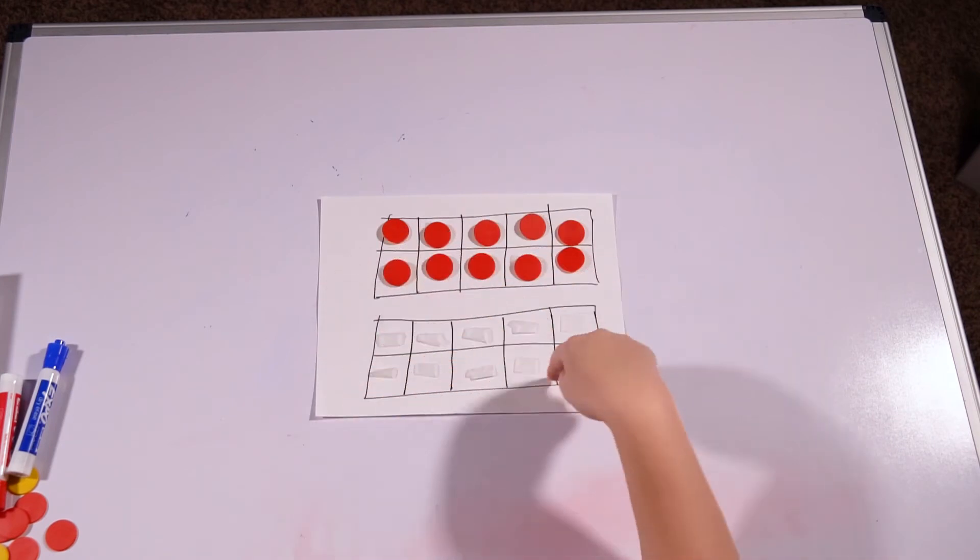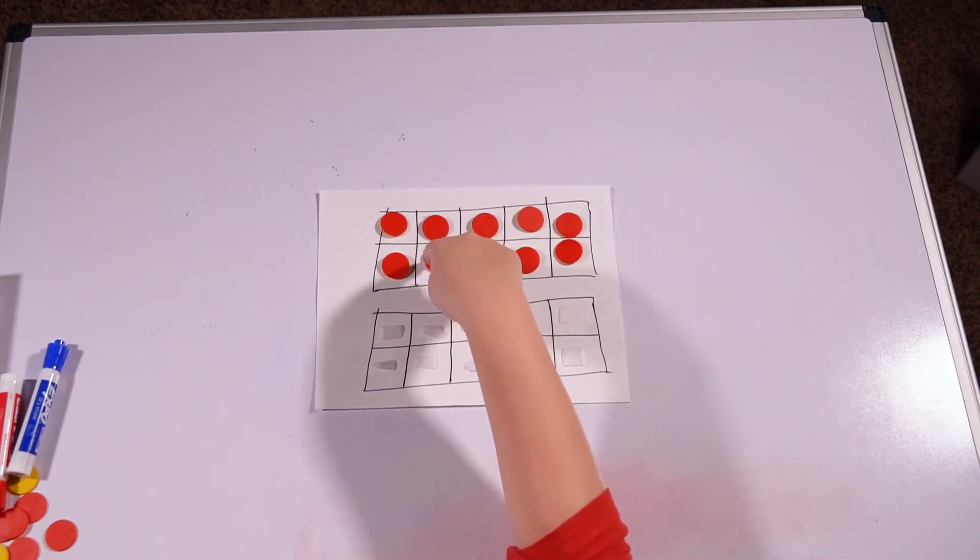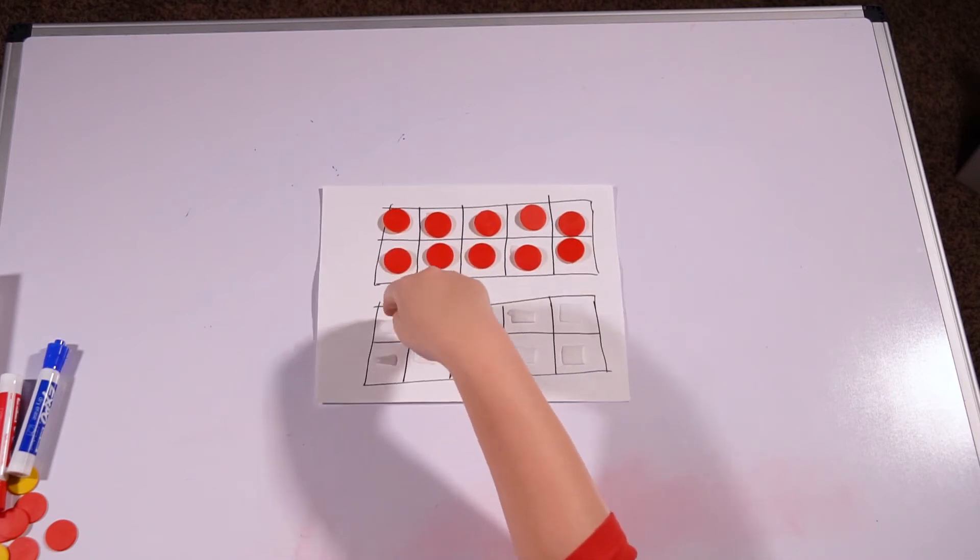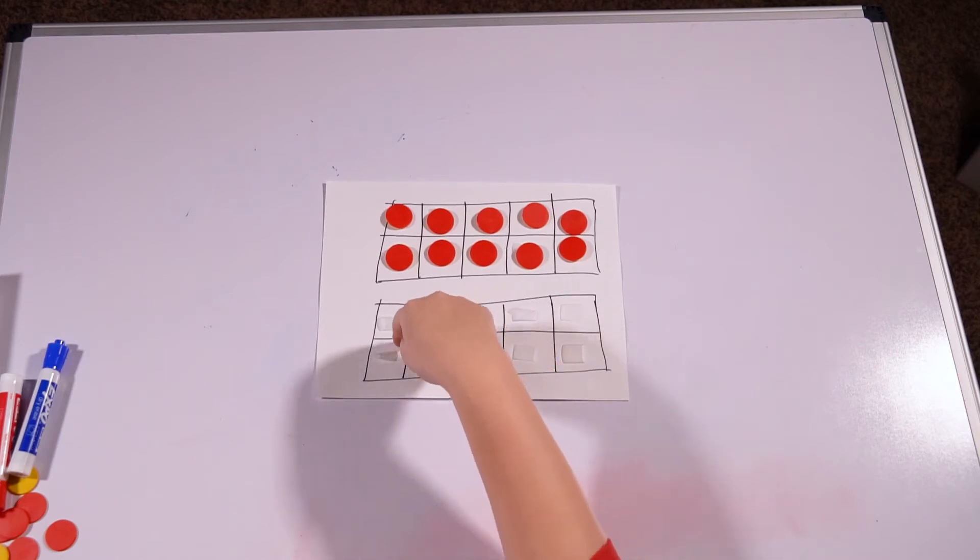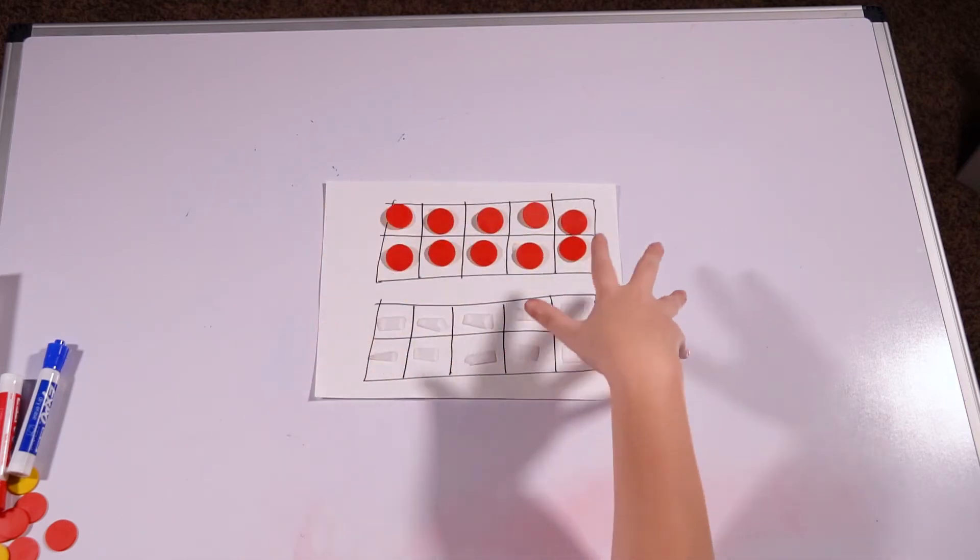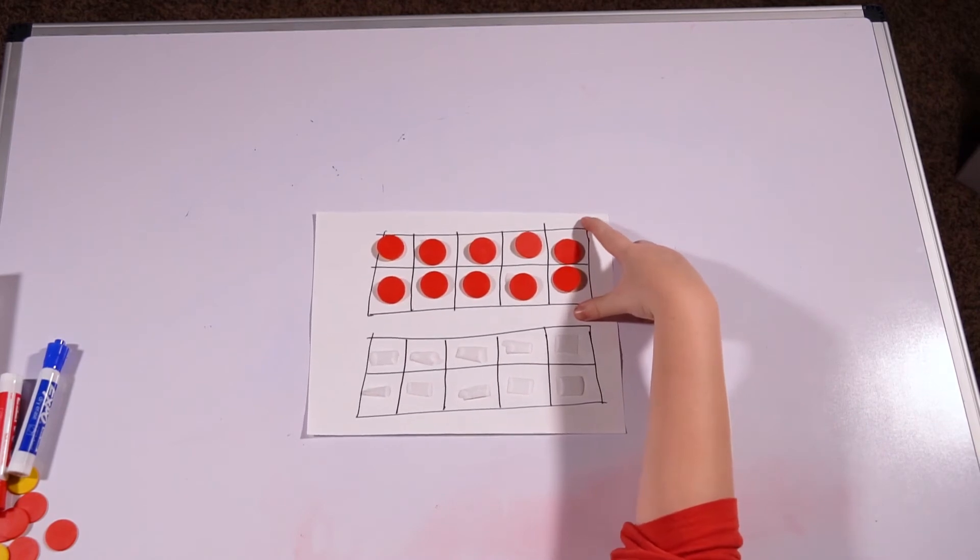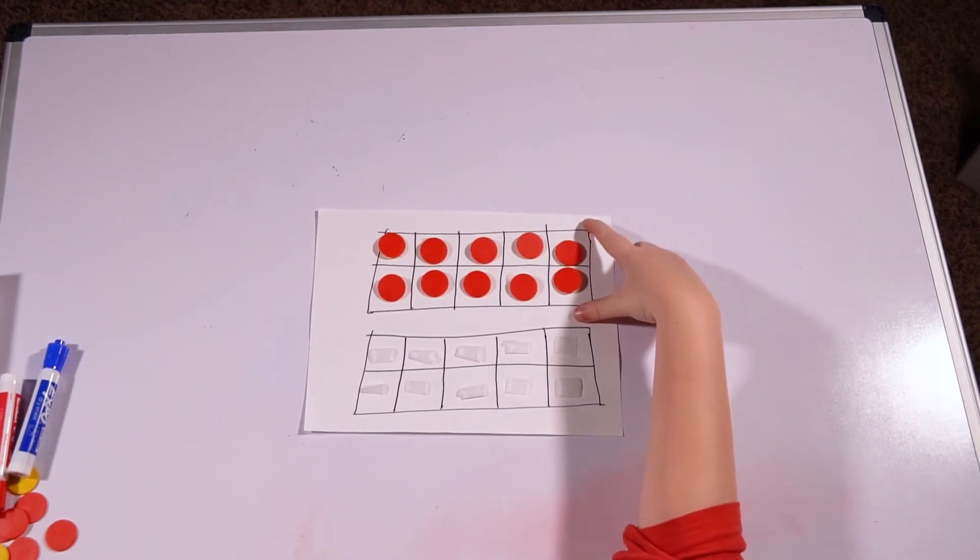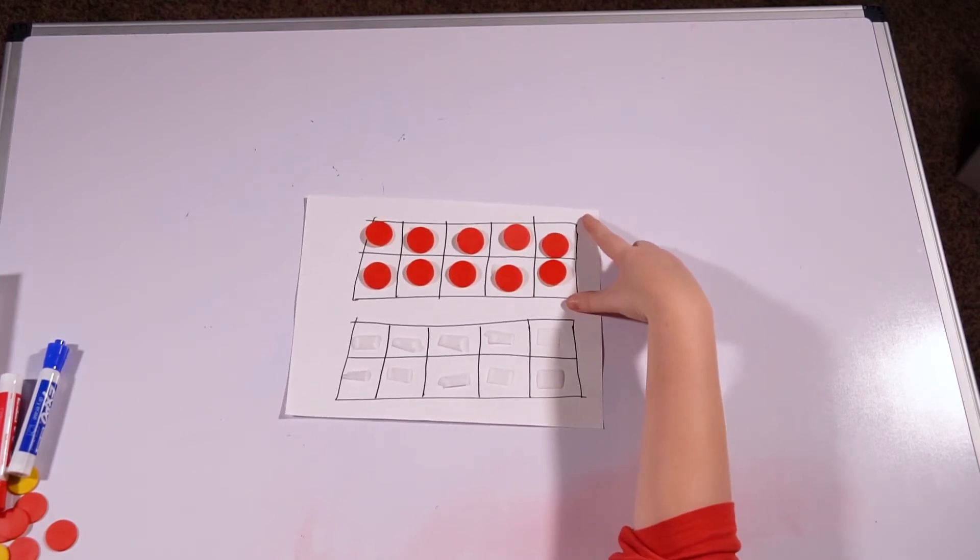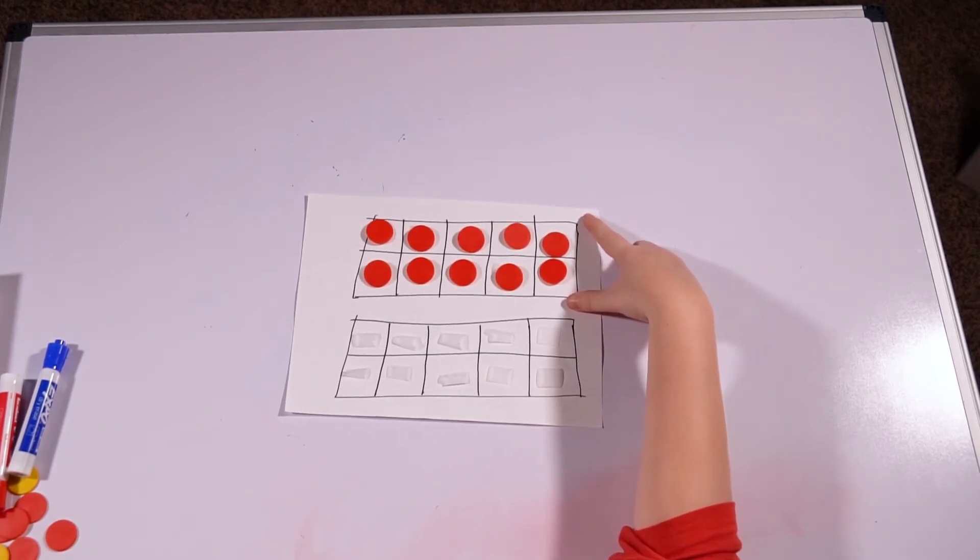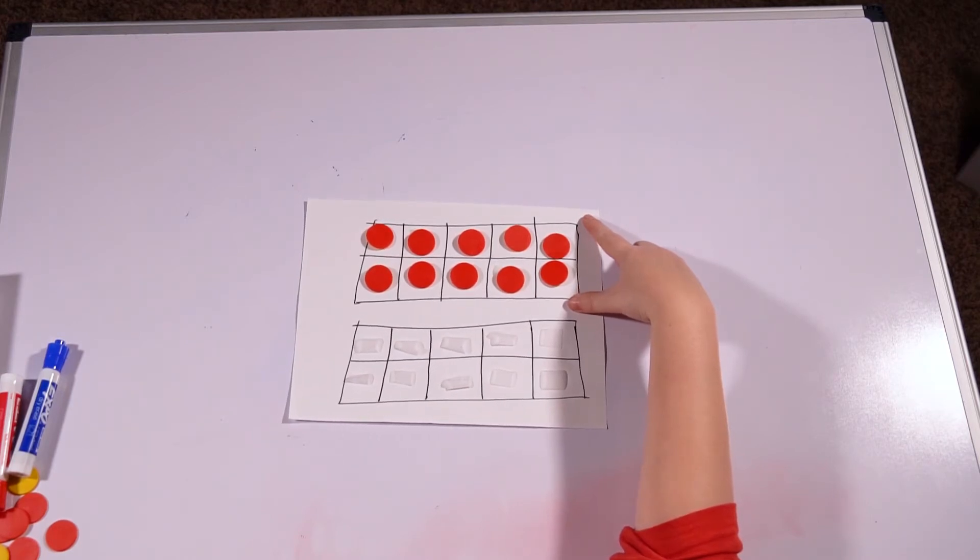10 up here and 10 down here. One, two, three, four, five, six, seven, eight, nine, 10, 11, 12, 13, 14, 15, 16, 17, 18, 19, 20. So I have 20 total boxes here. Now, I have one 10 frame filled up. So how many dots do I have already on my double 10 frame? 10, I have 10 boxes filled. So I already have 10 dots.